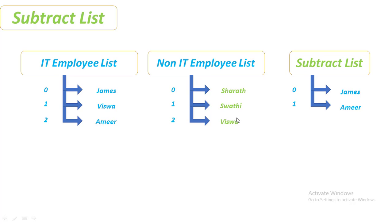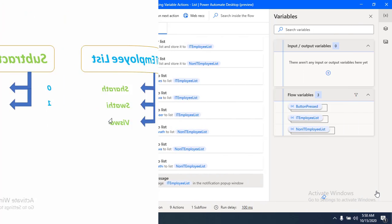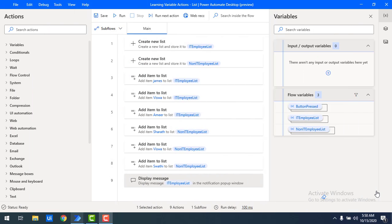I hope you understand theoretically how to use merge list, subtract list, and find common list items. Now I will show you practically how it looks. Without wasting time, let's get started — let me switch to Power Automate Desktop.